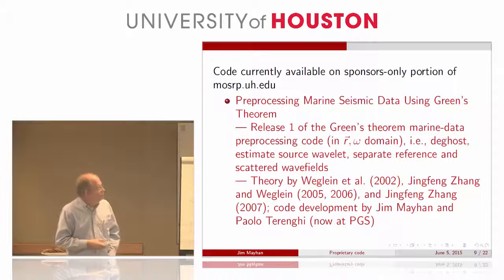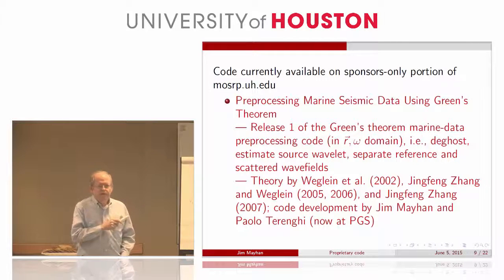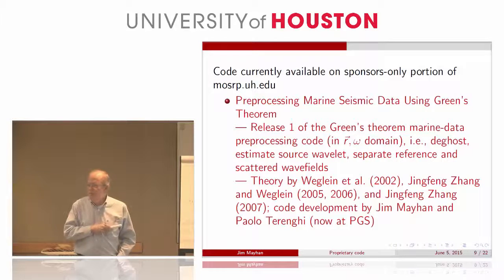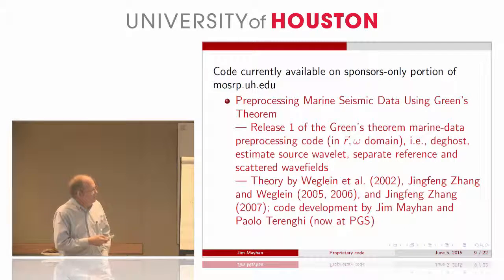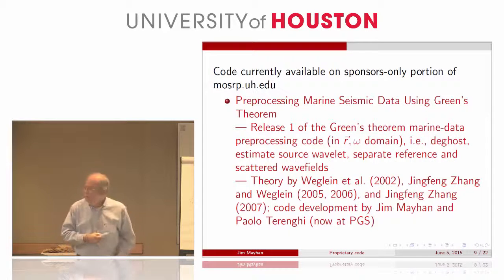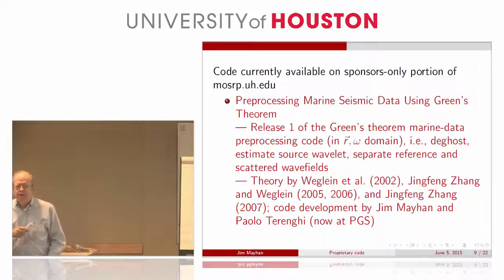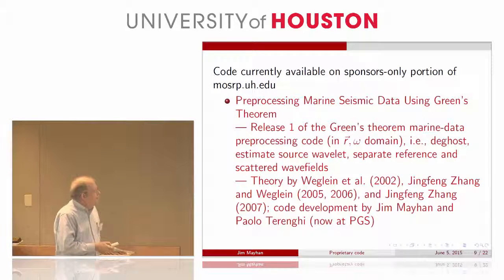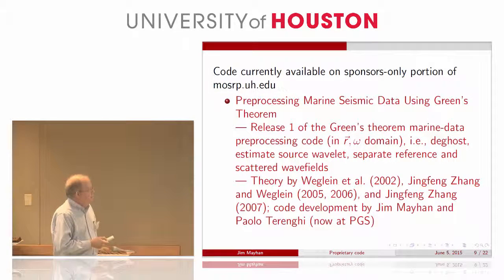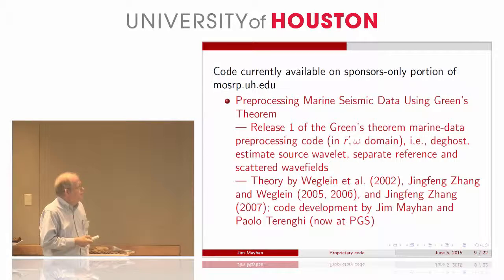Continuing on, we have release one of the Green Serum Code, which I tested on field data during my first internship at PGS. Same theory — but I want to recognize Paolo's contribution here, because this was my first time to do something in C. As I tell people, Paolo told me how to spell C. Continuing on, we have the 3D ISS multiple removal code, again by Sam, with theory by Cavaglio and Wegwein et al.